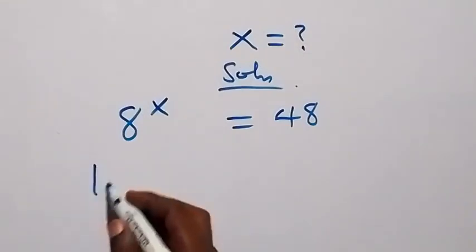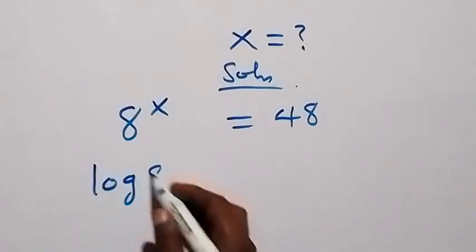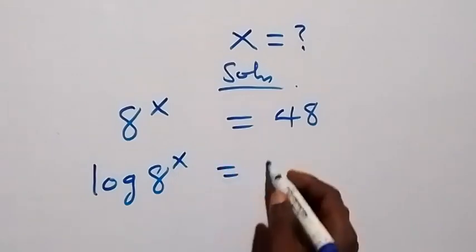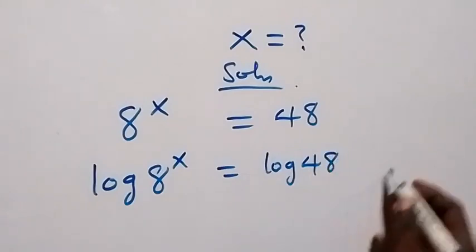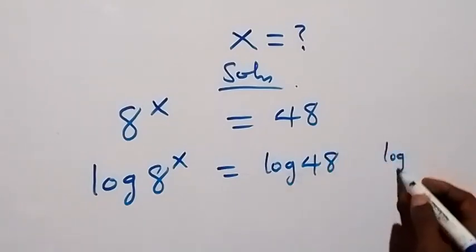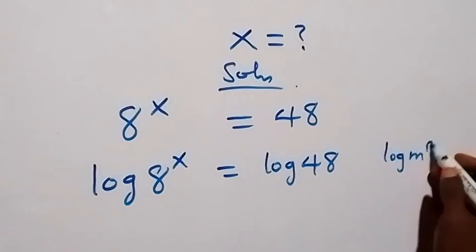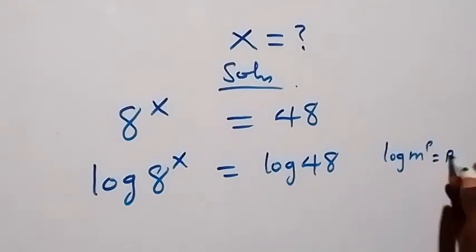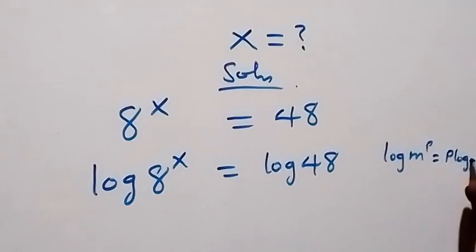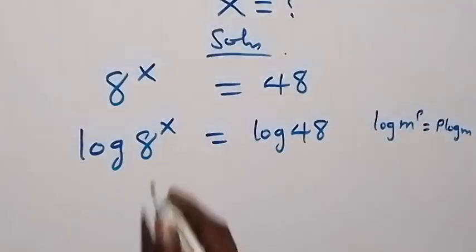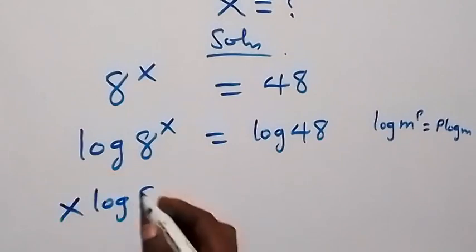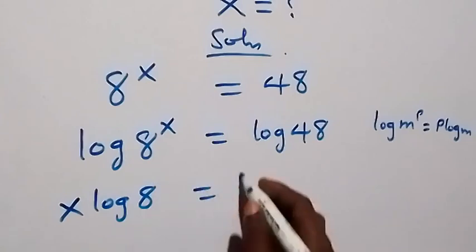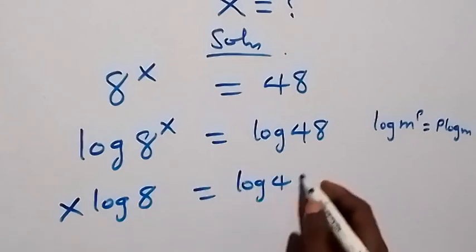Let's take the log on both sides. Then we have log 8 raised to power x equals to log 48. From the power rule of logarithms, log n raised to power p is equal to p log n. When we apply this here, we have x log 8 equals to log 48.